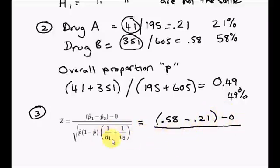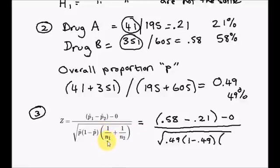And this is all going to be over, this is the standard error. Here's my total proportion which I found here, 0.49, then 1 minus 0.49. 1 over N1, the sample size that corresponds with that P1, 0.58, is 605. And the sample size that corresponds with N2 is 195. As we're adding these, it doesn't really matter which way round you write them, as long as you get both of the sample sizes.